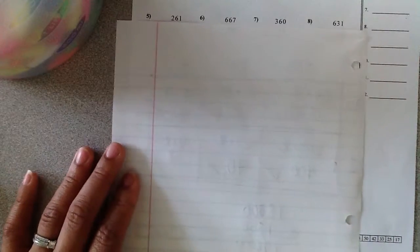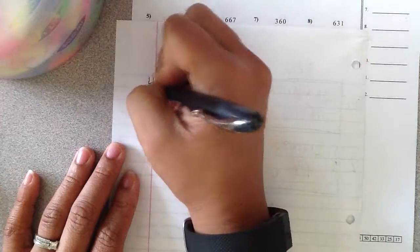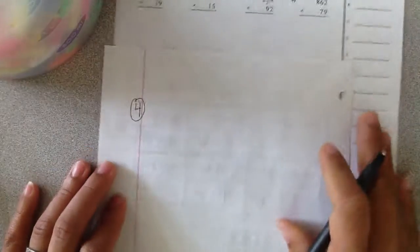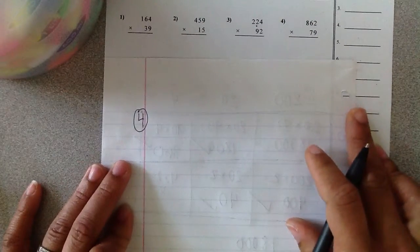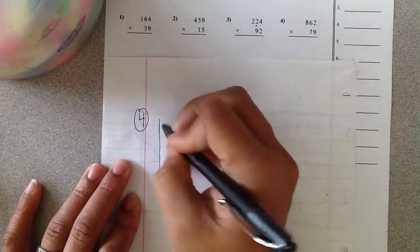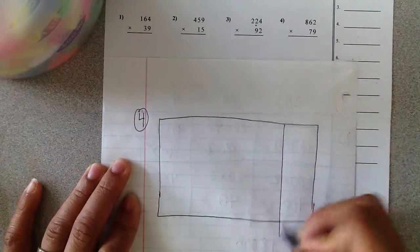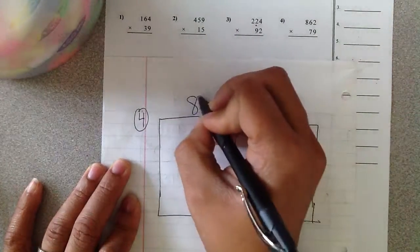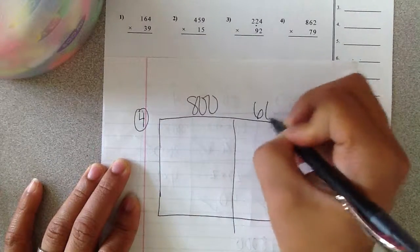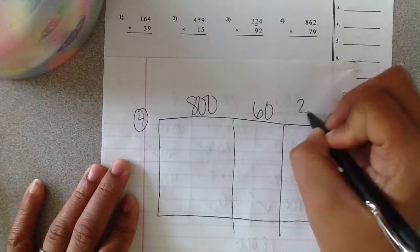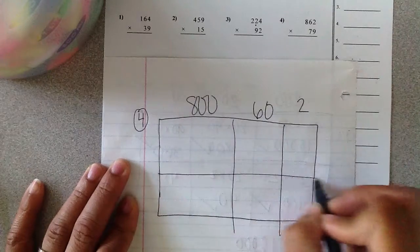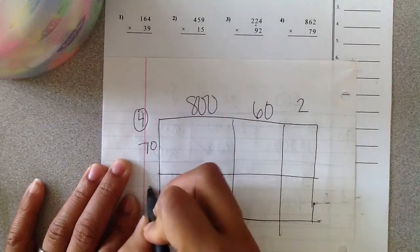And then finally on this video we're going to solve number four. We have eight hundred sixty-two times seventy-nine. So again three boxes up top. I have eight hundred sixty and then I have two. Across the side I have seventy and I have nine.